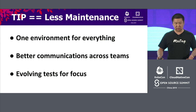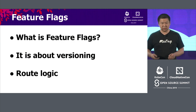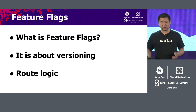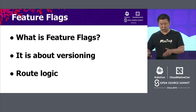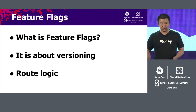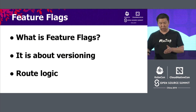Think about it: tests are also code that needs maintenance. That actually brings feature flags. Feature flags are about having things you want to roll out and things you don't want users to see. It's about versioning — routing the logic to the right backend, to the right source of truth.